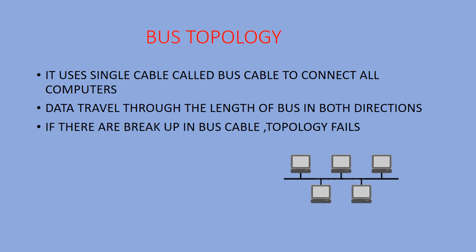First we will discuss bus topology. In bus topology, there is a central cable called the bus cable. Each computer is connected to this bus cable, and data travels along the length of the bus in both directions. The disadvantage is that if anything happens to this bus cable — if it breaks — then there is no connection at all and the topology fails.